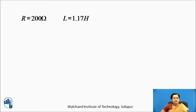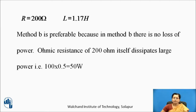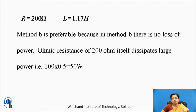So R equals 200 ohm and L equals 1.17 Henry. Method B is preferable because in method B there is no loss of power. The ohmic resistance of 200 ohm dissipates large power: 100 into 0.5 equals 50 watt. But in the inductive circuit, pure inductance has no power consumption; power consumption in inductance is zero. So the second method is preferable.